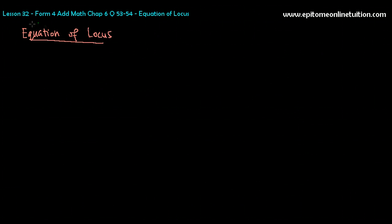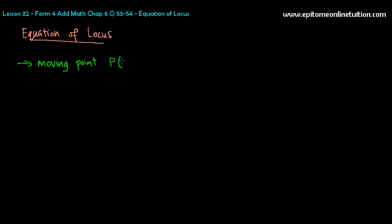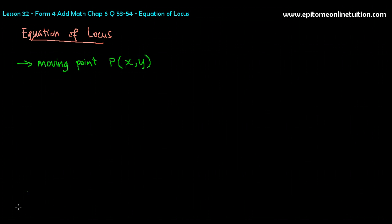Generally, this question for Equation of Locus works this way. First, I want you to understand the concept. There will always be a moving point — if you remember what you learned from Form 2, it's the same thing. There will always be a moving point, and the moving point can be P or Q. Since it is a moving point, the coordinates of point P will always be X and Y. It cannot be a fixed coordinate because it is always moving.